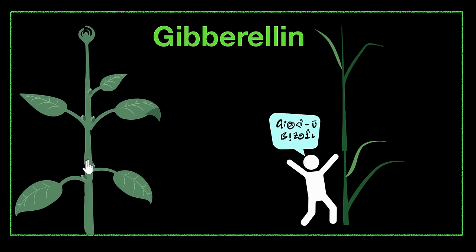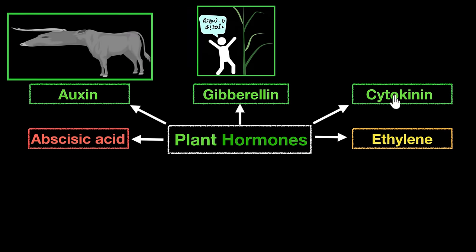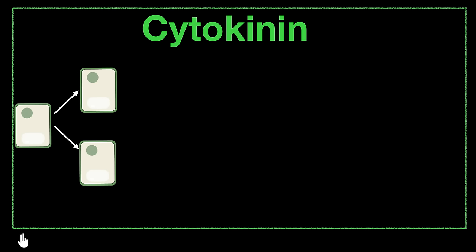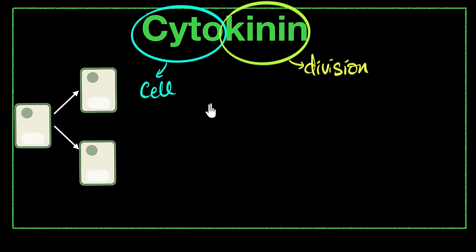So both auxin and gibberlin cause elongation of the stem by elongating the cell itself. But if you want to grow new leaves and fruits, you need to make new cells, not just make cells elongate. That brings us to the next hormone: cytokinin. The major job of cytokinin is cell division — it takes one cell and divides it into two. The word cytokinin itself comes from cell division: 'cyto' means cell and 'kinin' means division.